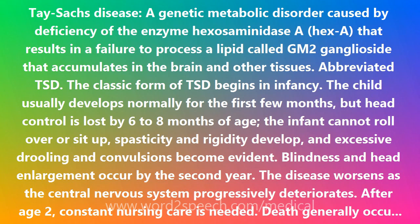The classic form of TSD begins in infancy. The child usually develops normally for the first few months, but head control is lost by 6 to 8 months of age. The infant cannot roll over or sit up, spasticity and rigidity develop, and excessive drooling and convulsions become evident.